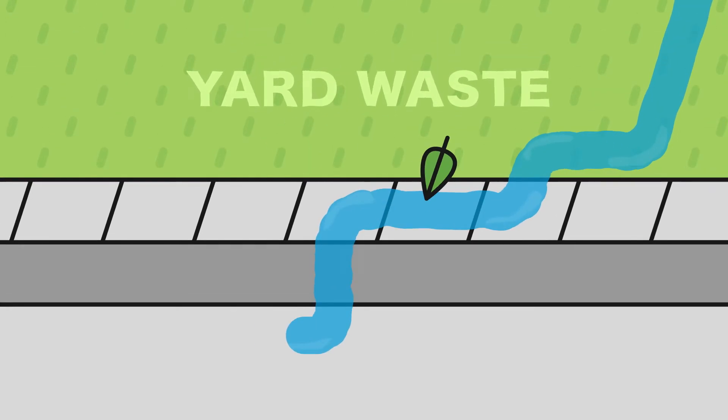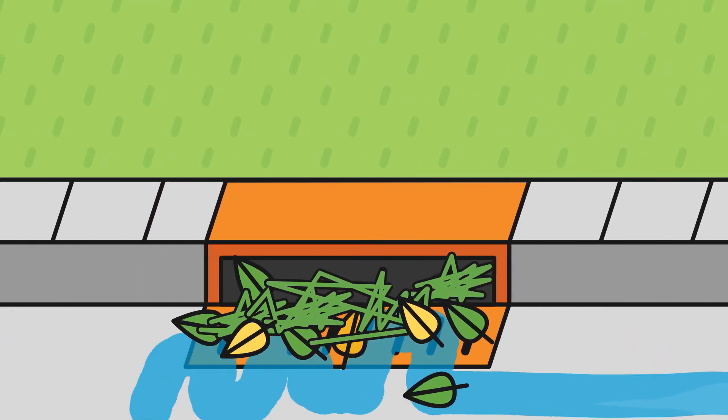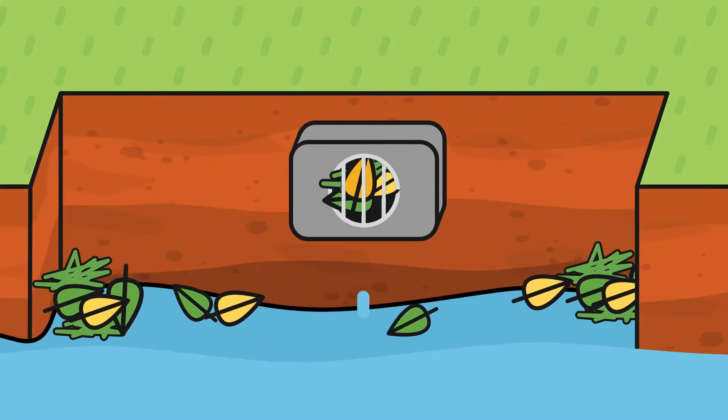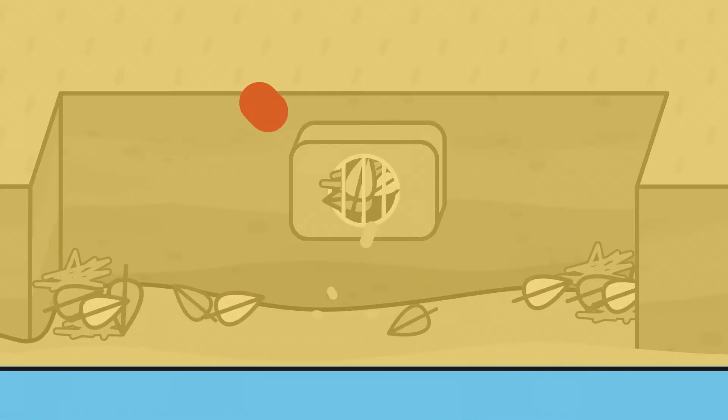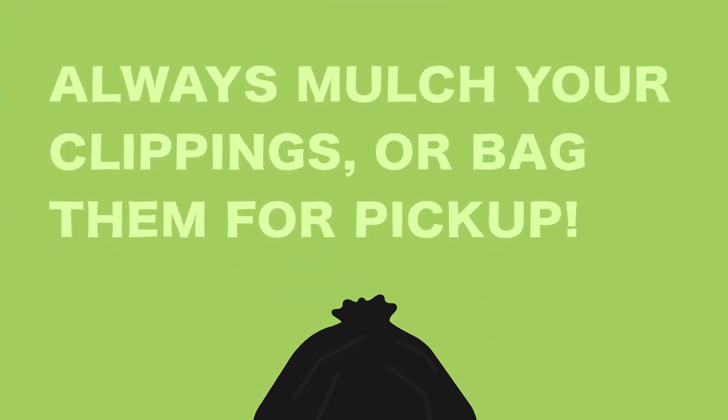Yard waste. Grass clippings, leaves, and other yard waste can clog our storm drains and create serious flooding in your neighborhood. It also creates a mess in the nearest stream or pond where it ends up. Always mulch your clippings back into the lawn or bag them for pickup.